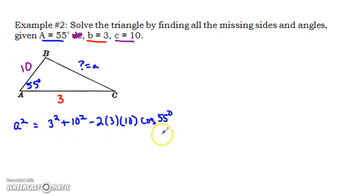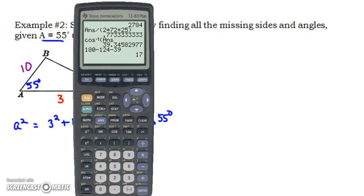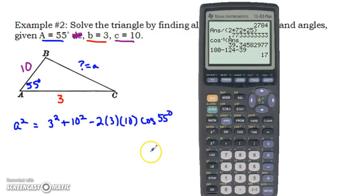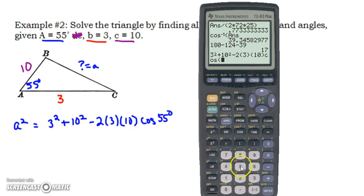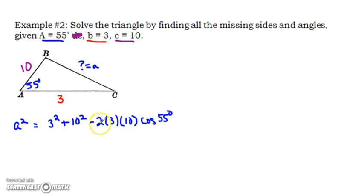A² is these two sides, 3² plus 10², minus 2 times A and B times the cosine of 55 degrees. Now, if you really wanted to, you could type all of this in your calculator at once, but the parentheses become very important. 3² plus 10² minus 2 times 3 times 10 times the cosine of 55. It's kind of an all-or-nothing thing. Either you're going to type everything in, or you're going to type it in chunks.